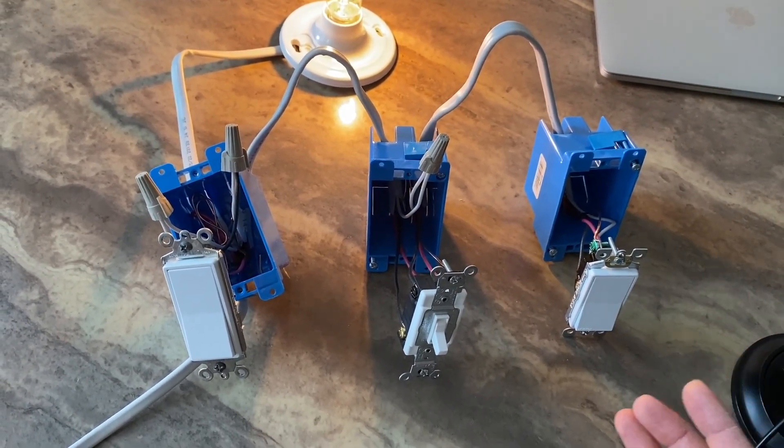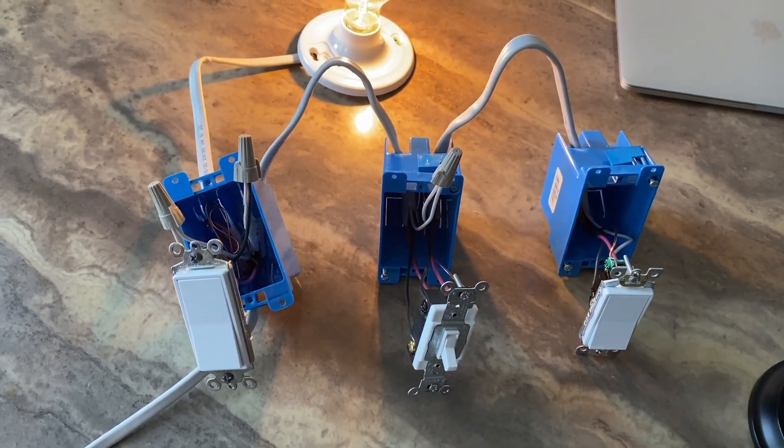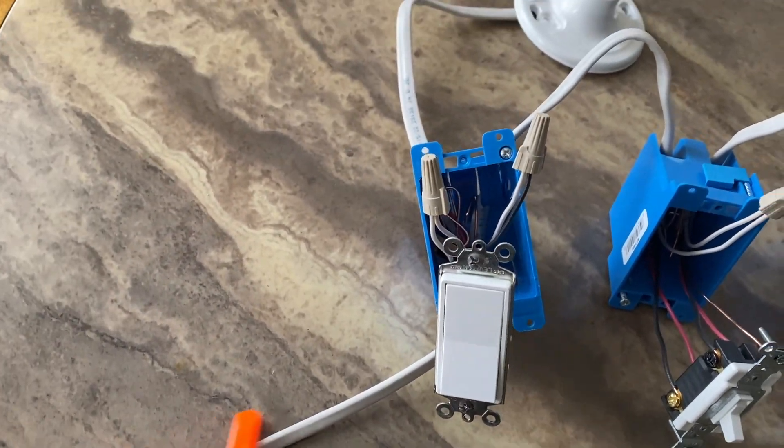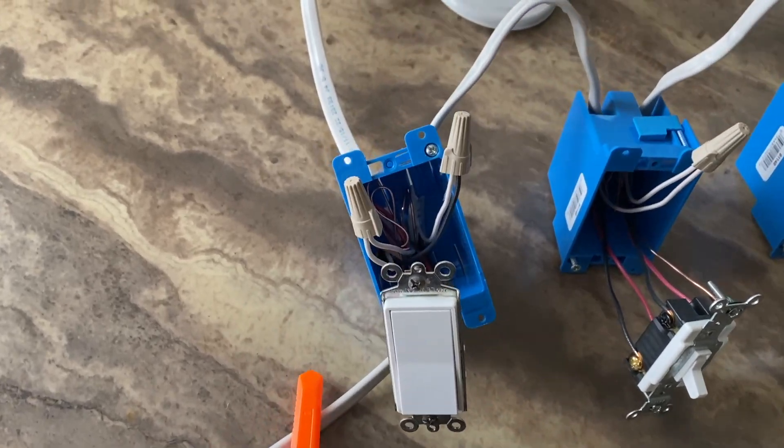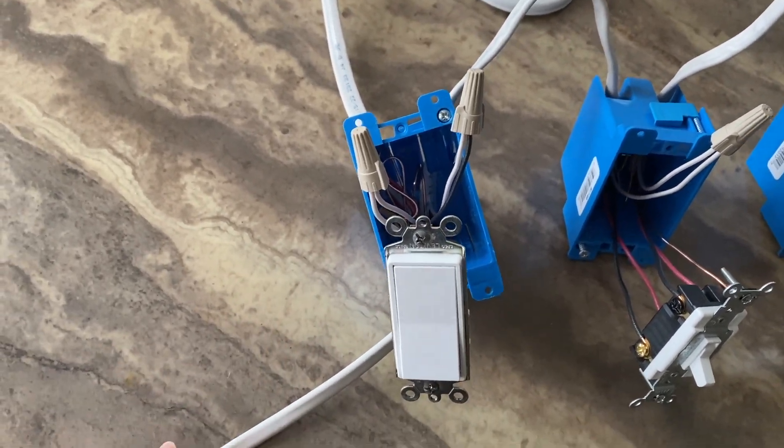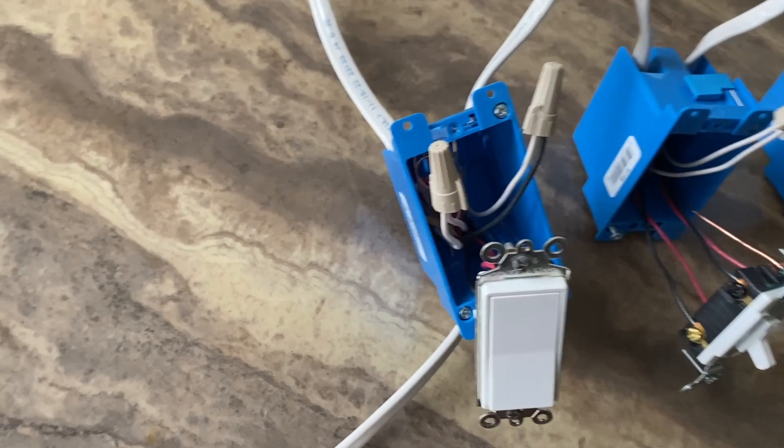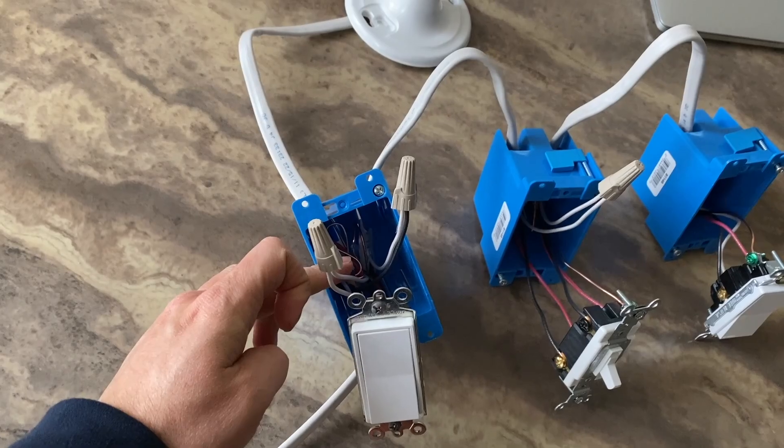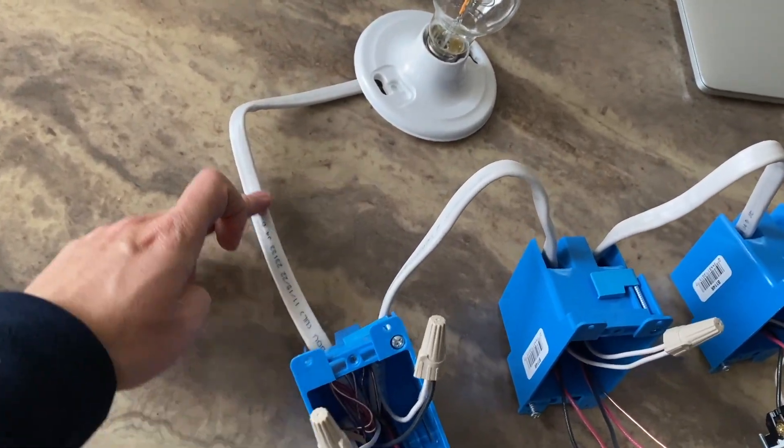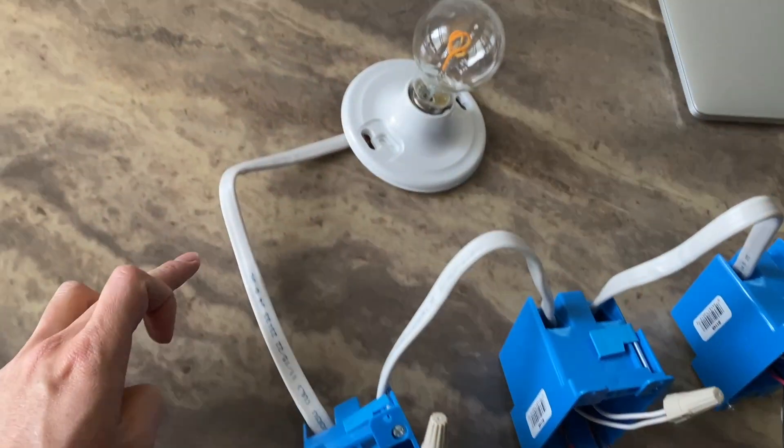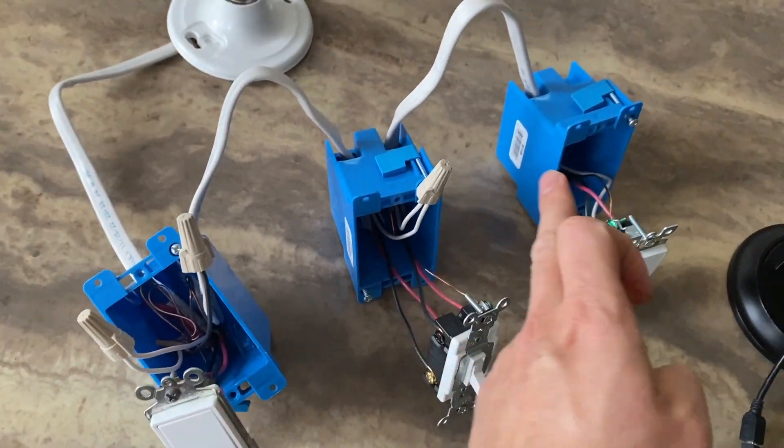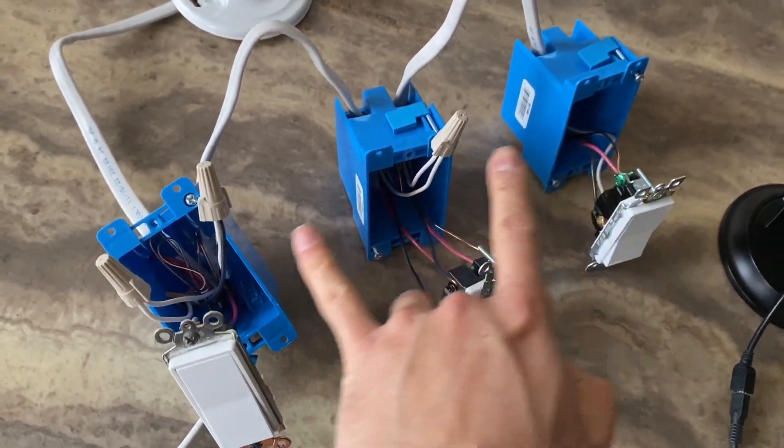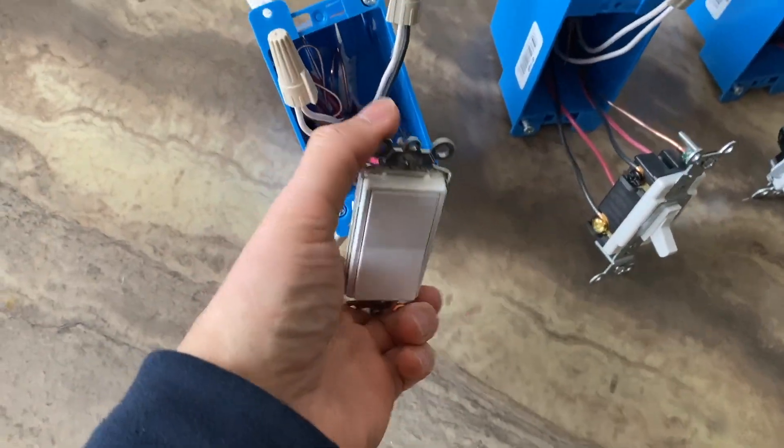So as you can see, this is the power - a lot of people call it branch circuit or line or home run. We have 14-2 here coming into first box and we have the load which is our light, 14-2, and then between these switches we have 14-3, 14-3, so basically traveler wires.